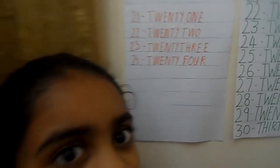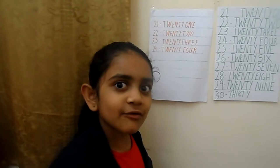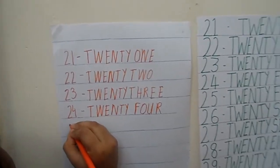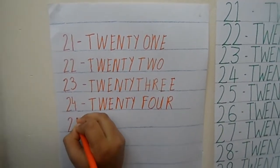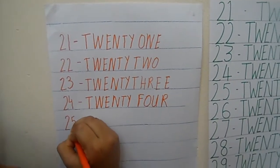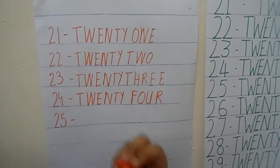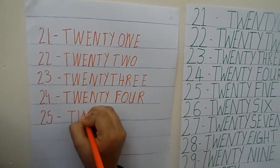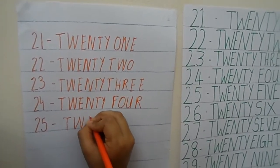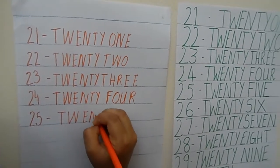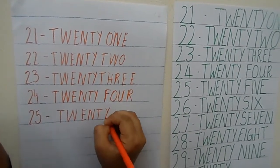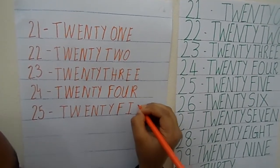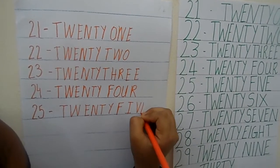Now what is the next number? 25. So let's see how to write it. We learnt 2 and 5, so write a 2 and a 5. 25. Now let's see the number name of 25: T, W, E, N, T, Y, F, I, V, E.